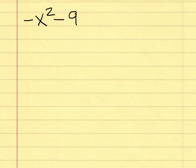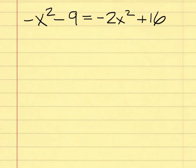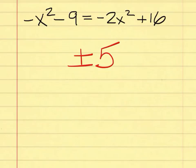Practice problem. Here is the practice problem — bring this up once you find the solution. The problem is: negative x squared minus 9 equals negative 2x squared plus 16. There's no need to review this problem because everybody had plus or minus 5.